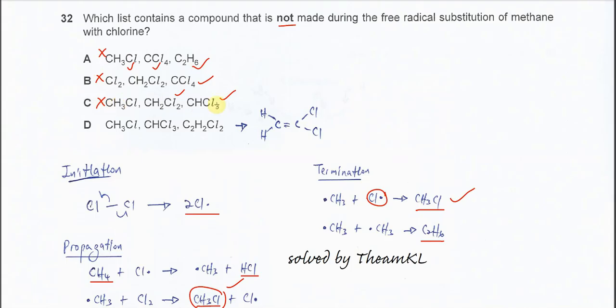D, this one can form, this one can form, but this one cannot be formed because this is the C=C double bond. For this reaction it cannot form this compound.